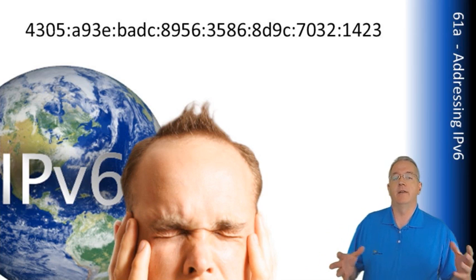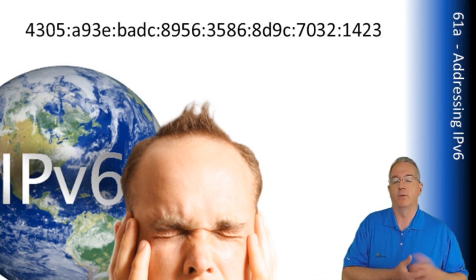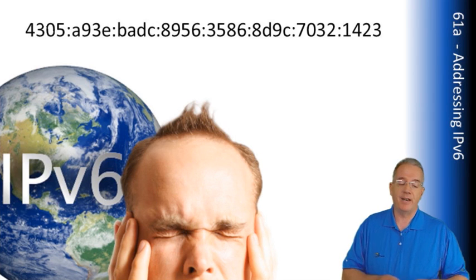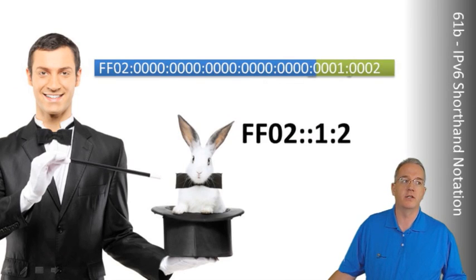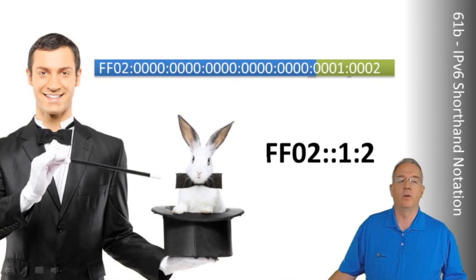Now, the good news is that if you go through and use IPv6 addresses, you may find that a lot of times you have a lot of duplication. So, for example, we have an address here, which is FF02, and then a whole bunch of zeros, and then 0, 1, 0, 2.